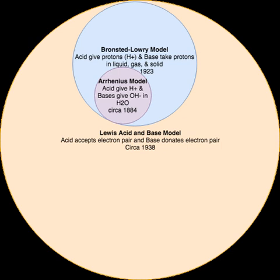The first modern definition of acids and bases in molecular terms was devised by Svante Arrhenius. A hydrogen theory of acids, it followed from his 1884 work with Friedrich Wilhelm Ostwald in establishing the presence of ions in aqueous solution, and led to Arrhenius receiving the Nobel Prize in chemistry in 1903. As defined by Arrhenius, an Arrhenius acid is a substance that dissociates in water to form hydrogen ions; an acid increases the concentration of H+ ions in an aqueous solution, causing the protonation of water or the creation of the hydronium ion.